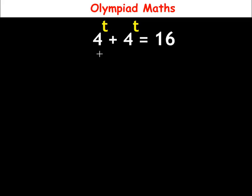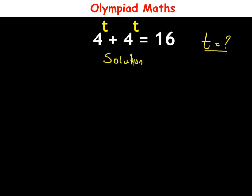In this video, we solve 4 raised to power t plus 4 raised to power t is equal to 16, and we want to find the value of t. To do this, we start with the equation: 4^t + 4^t = 16.